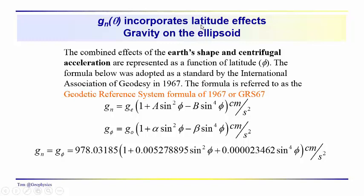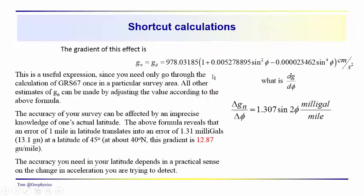The normal gravity also incorporates latitude effects and an equation which describes the normal gravity, both the shape of the Earth and the centrifugal acceleration are incorporated in this expression, is referred to as the geodetic reference system formula, GRF67. And it takes on this form where you have sine squared, sine to the fourth terms, and your result is in centimeters per second squared. So, this constant out here, g at the equator, 978.03185. And then, of course, these constants, alpha and beta, or A and B, are numbers which generally we don't memorize. We put those into Excel in order to do a calculation of the normal gravity at any particular point in your survey.